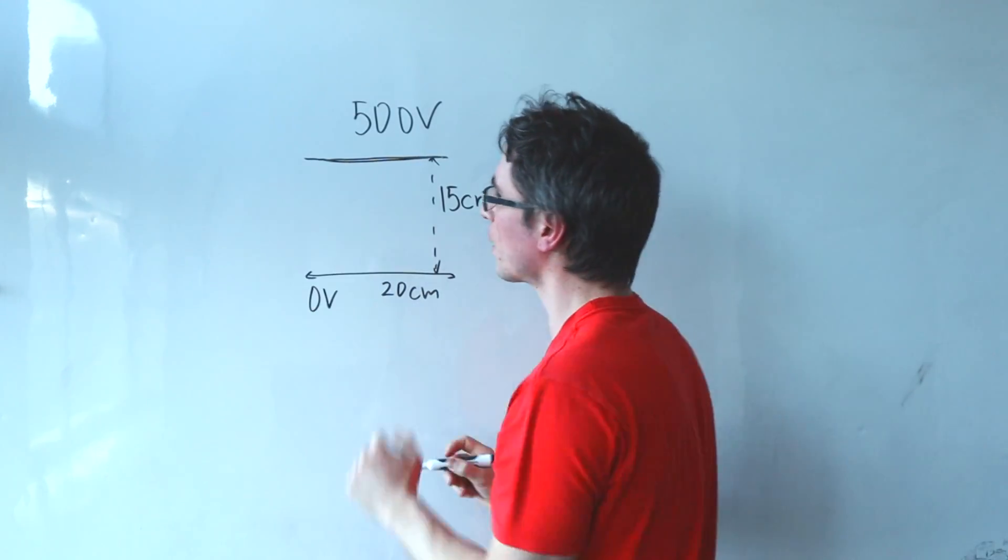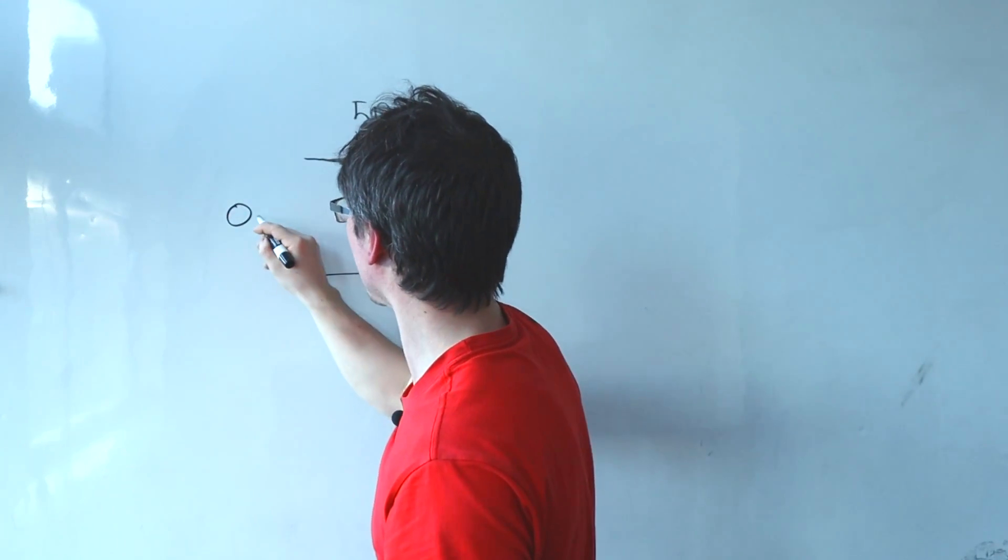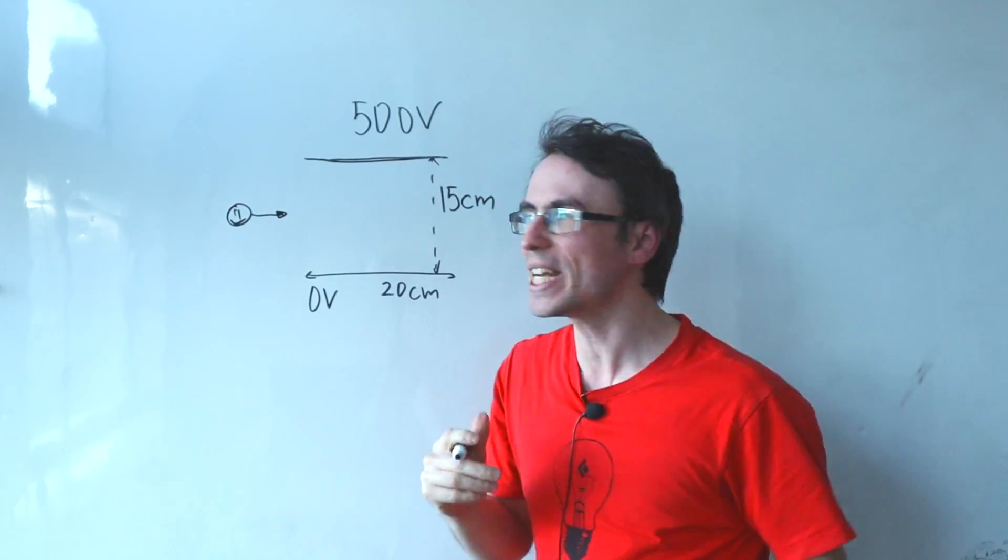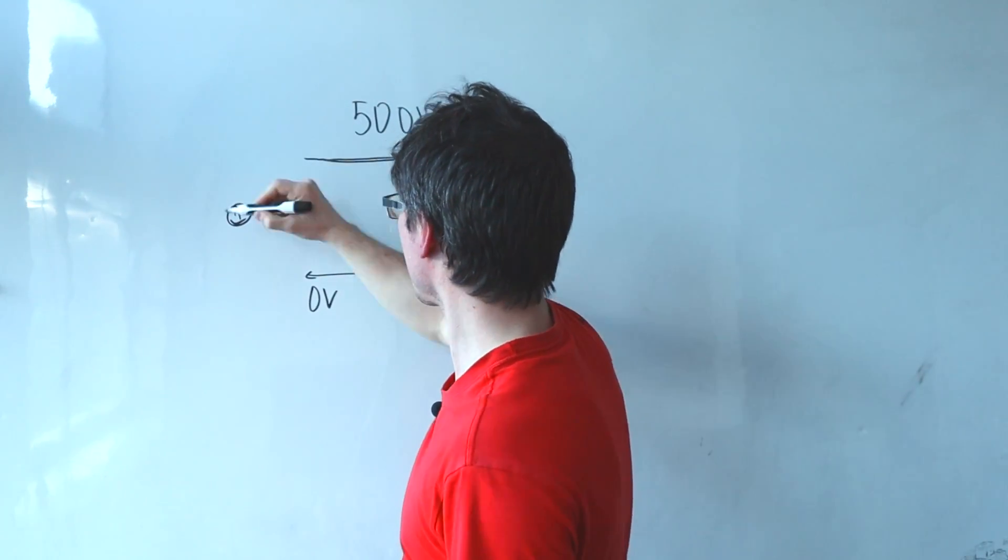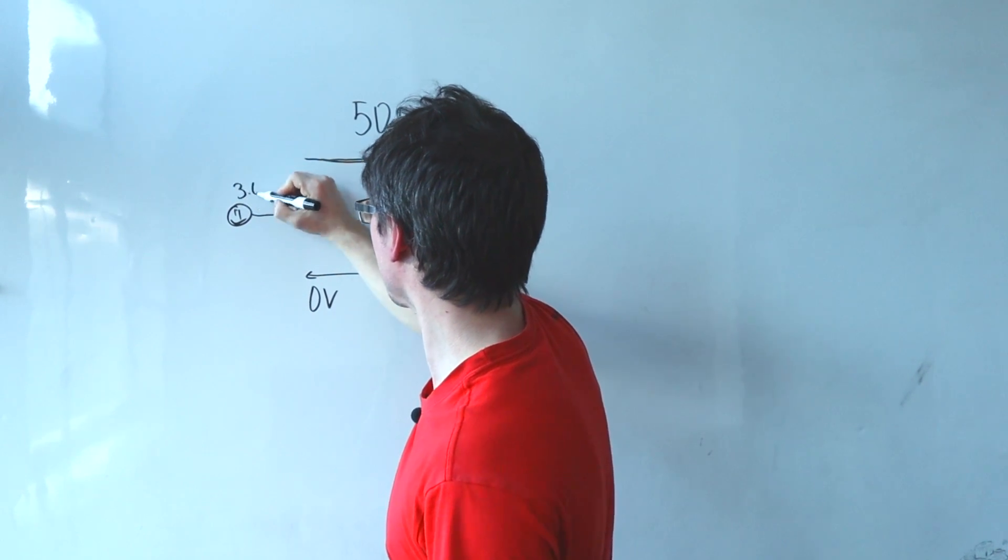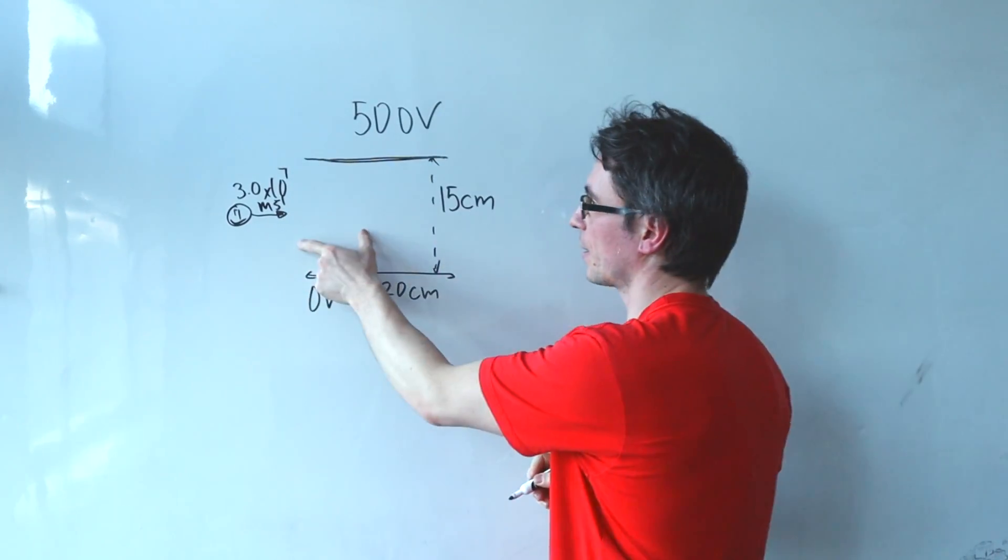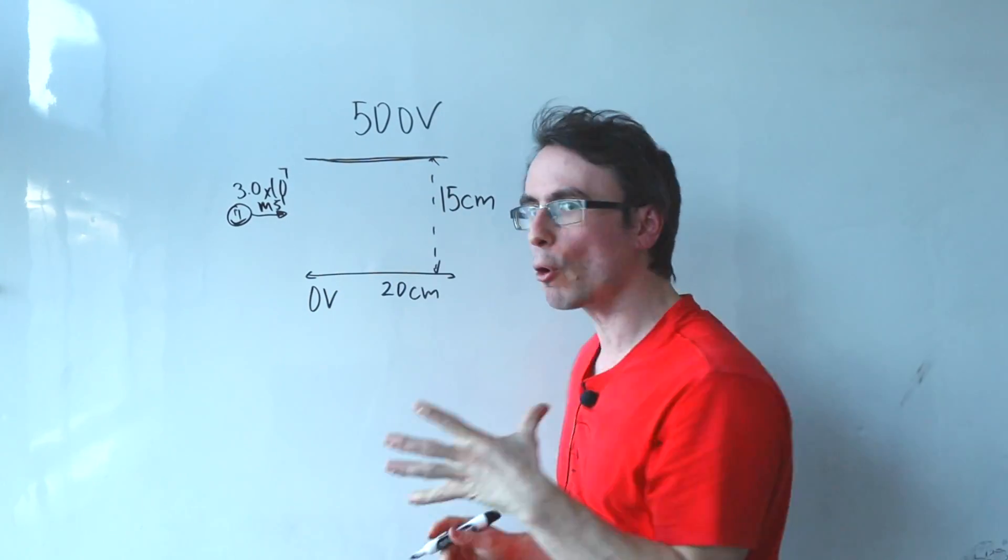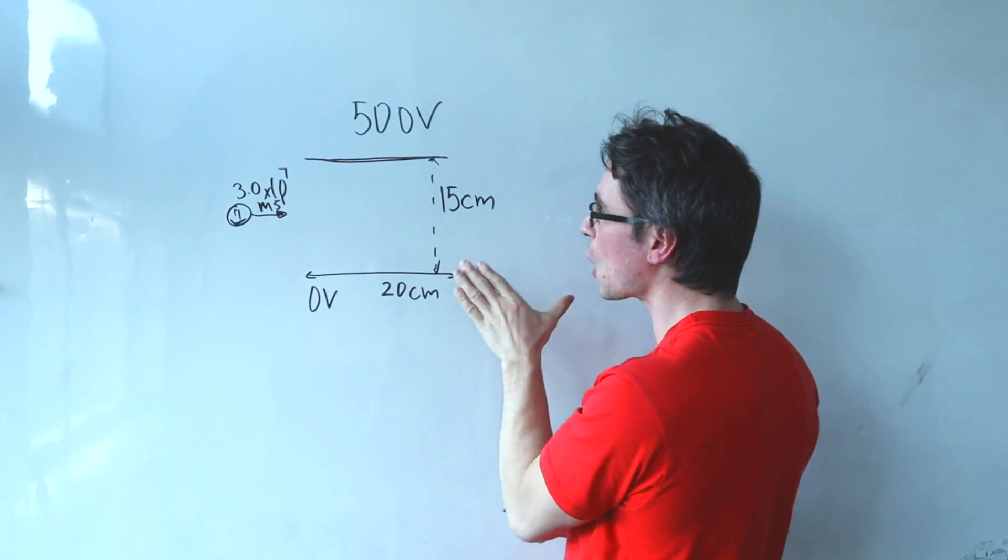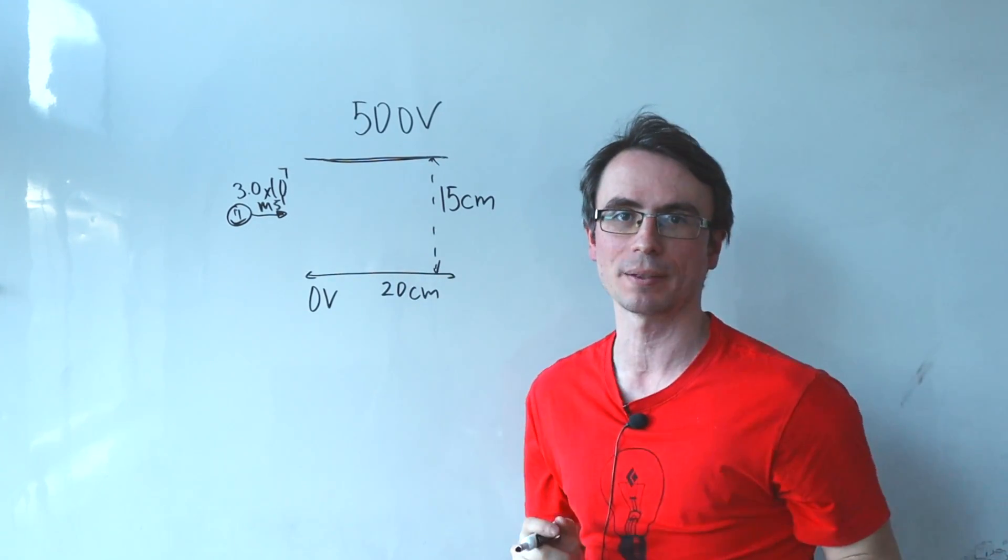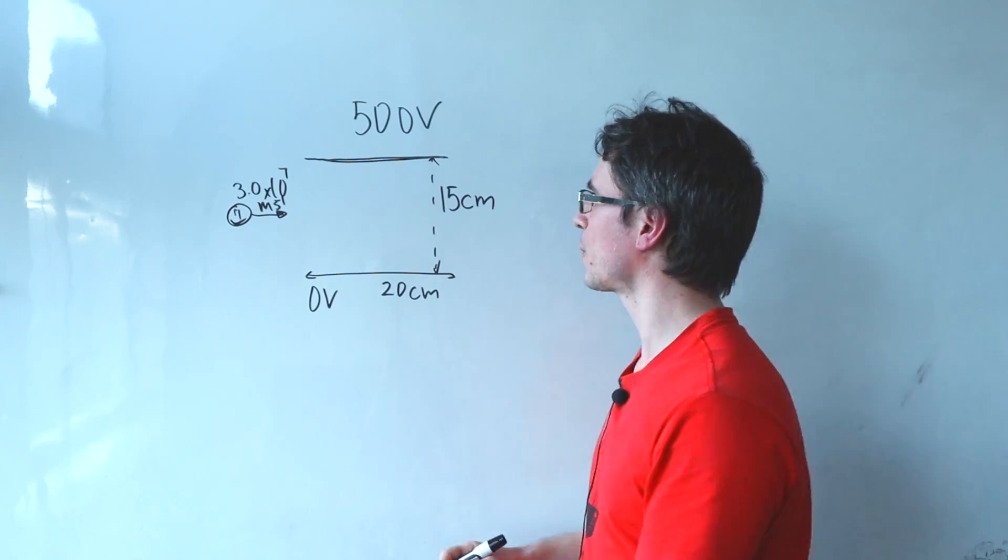Now if we were to fire off a proton through the plates at an initial really high speed, shall we say pretty close to the speed of light, let's say 3.0 times 10 to the power of 7 meters per second. Now is that proton going to be able to fly across the parallel plates or will it get absorbed?